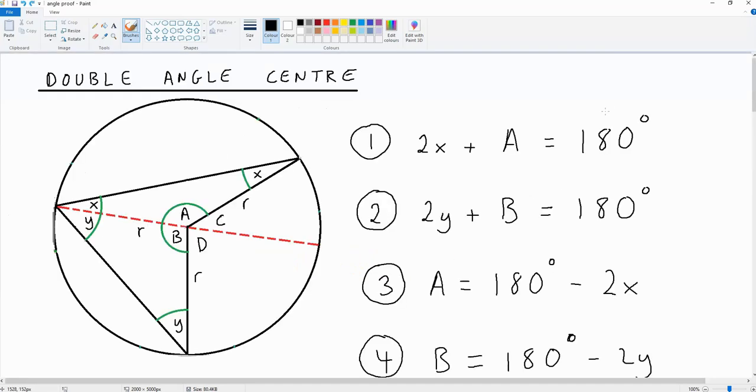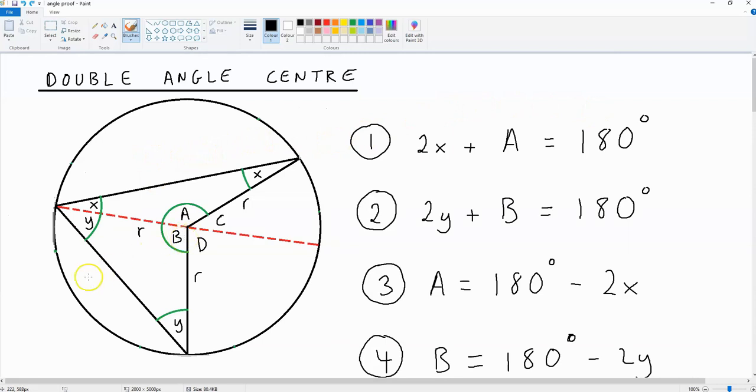Once again, because halfway around the circle is 180 degrees, we can say that b plus d is 180 degrees.